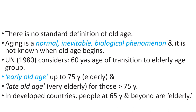There is no standard definition of old age. Aging is a normal, inevitable biological phenomenon and it is not known when old age begins. The UN considers 60 years of age as the transition to elderly. Early old age is up to 75 years, and late old age is for those more than 75 years. In developed countries, people at 65 years and beyond are considered elderly.